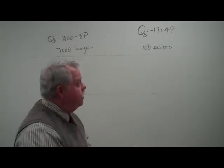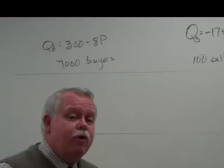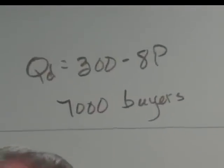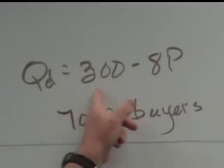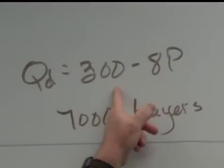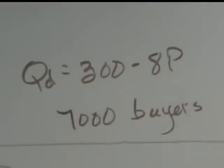We're going to do equilibrium, but mathematically with some very simple functions. Here's our situation. We've gone out into the market and done some research. We have recognized that the average buyer out there has a demand function that reads QD, the quantity demanded, is 300 minus 8P.